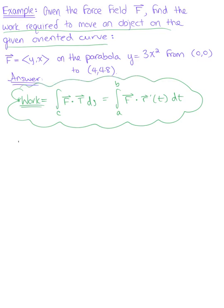The first thing we want to do is parameterize the curve. Here we are given a parabola y equals 3x squared, and it's oriented from the origin to (4,48). So we can say x is greater than or equal to 0, less than or equal to 4.